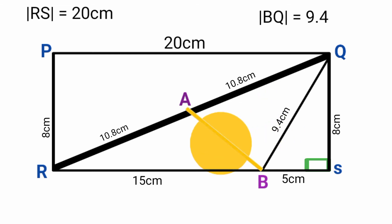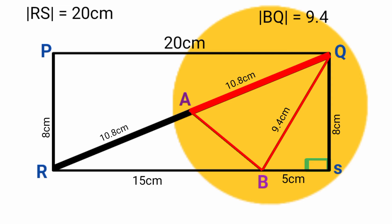Now let's find the length of line AB. There are two ways we could approach this. The first is from triangle ABQ, where we have the lengths of the other two sides, but that would require finding angles and would take more time. So we'll use the other alternative.